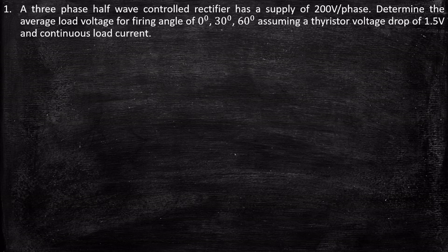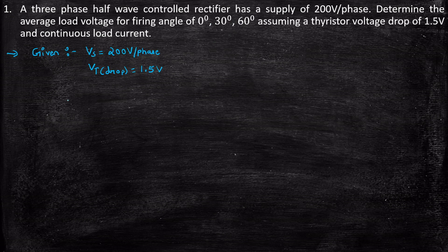So the first problem that is given to us is as follows. They are stating that a three-phase half-wave controlled rectifier has a power supply of 200 volt per phase. Determine the average load voltage for firing angle of 0, 30 and 60 degree assuming a thyristor voltage drop of 1.5 volt and continuous load current. So let us write down the given data. What is given to us? They have given V supply is 200 volt per phase.